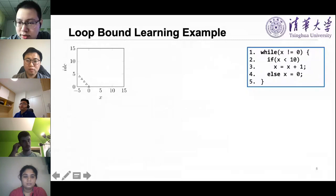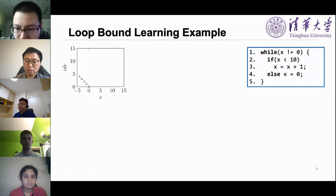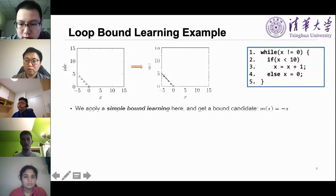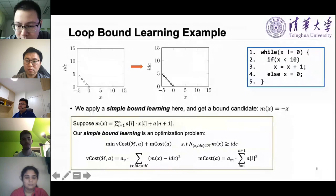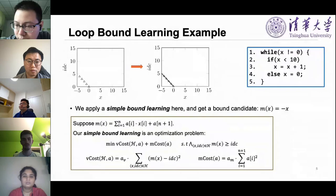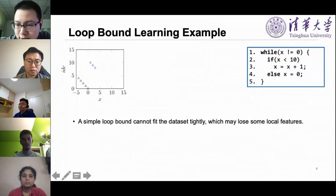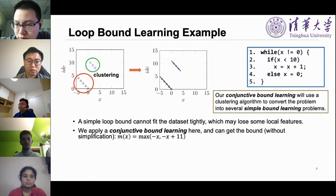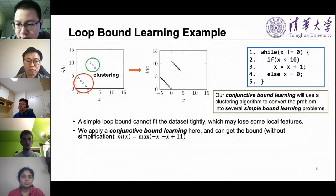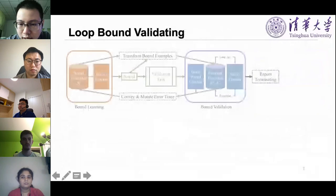Suppose the current dataset for the right program is the triangle nodes — we can apply simple bound learning here. The simple bound learning is an optimization problem. The optimization target has two terms: V-cost makes the bound result closer to the data points, and M-cost makes the form of the result more simple. However, one simple bound may not fit the whole dataset tightly. Thus, we propose conjunctive loop bound learning to learn more local features. Our conjunctive bound learning will use a clustering algorithm to convert the problem into several simple bound learning problems.